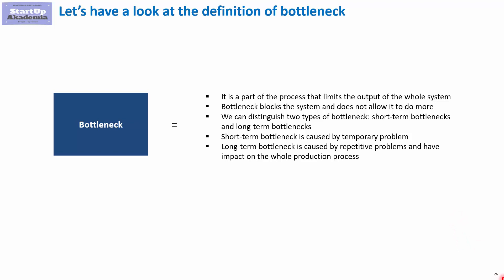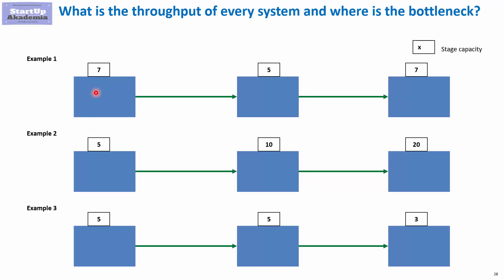Let's have a look at a short example of a bottleneck. Imagine that we have a production that has to go through three stages — one, two, three — and above each stage you can see its capacity. The bottleneck is the stage with the smallest capacity that limits the whole system. In example one, the bottleneck is stage two, with capacity five, whereas all other stages have capacity seven. In the second example, the bottleneck moves to the first stage with capacity five, while the others have much bigger capacity. In the third example, the bottleneck jumps to stage three with capacity three, while the others have capacity five. So we find the bottleneck and then try to remove it.